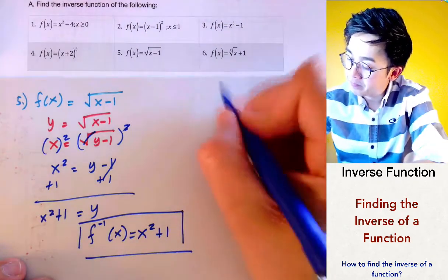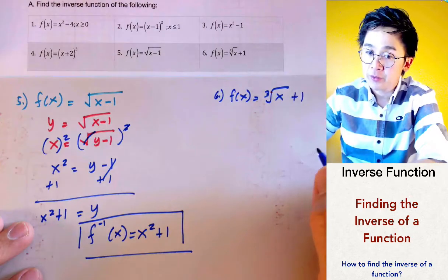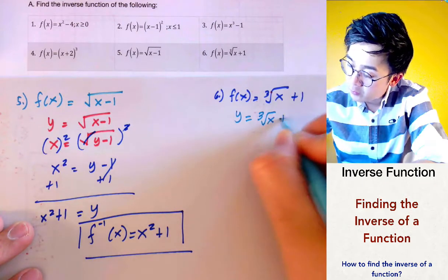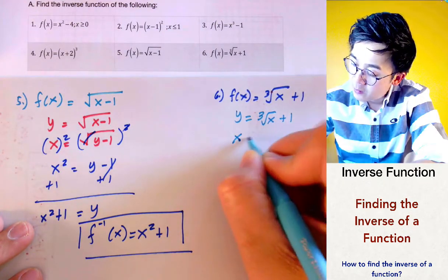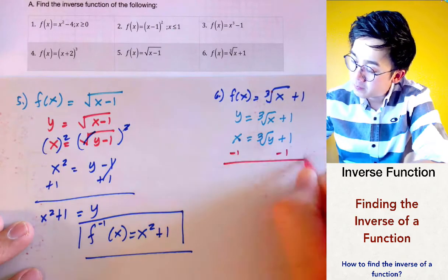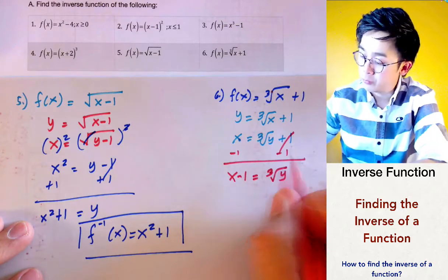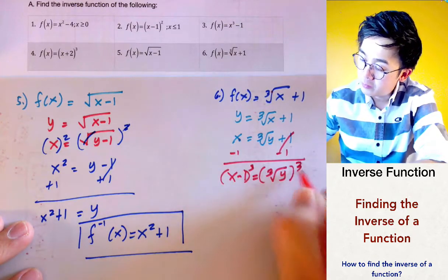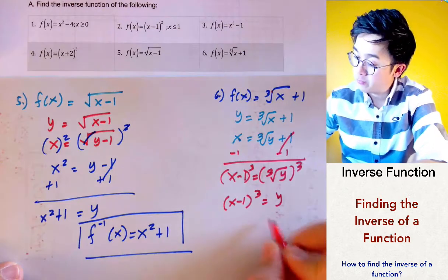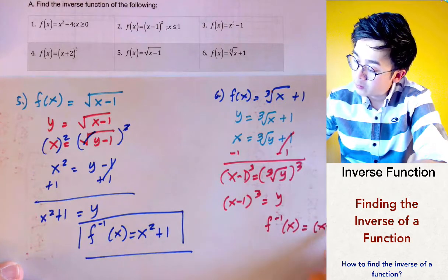For problem number 6, we have f(x) = ∛(x + 1). We change this to y = ∛(x + 1), interchange x and y, and solve for y. Subtracting 1 gives x - 1 = ∛y. Taking the cube of both sides gives (x - 1)³ = y. So f⁻¹(x) = (x - 1)³.